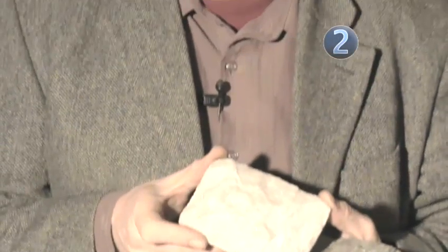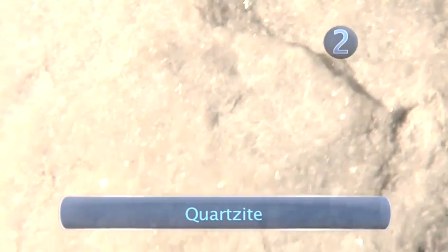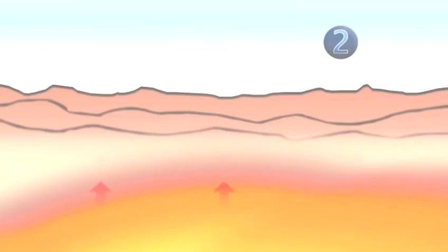This metamorphic rock is a quartzite. If I move it backwards and forwards, you can see all the tiny quartz crystals glistening at you. Originally, these were quartz grains in a sandstone, but under the application of heat, that quartz regrew. And because the crystals were getting larger, they started growing into each other to make a hard crystalline rock just like this one.